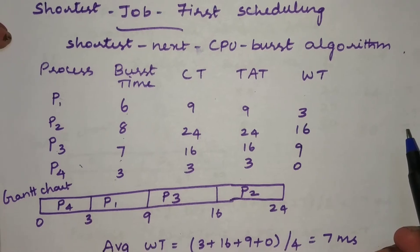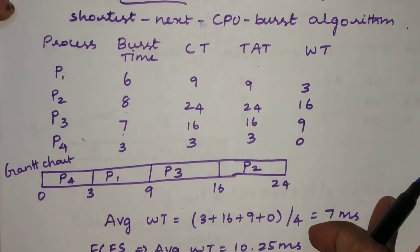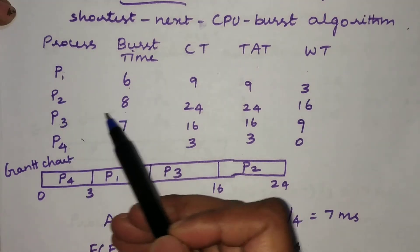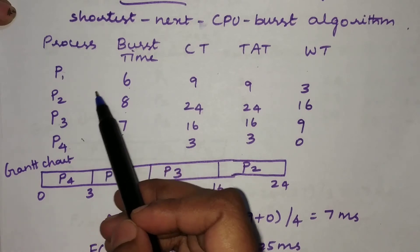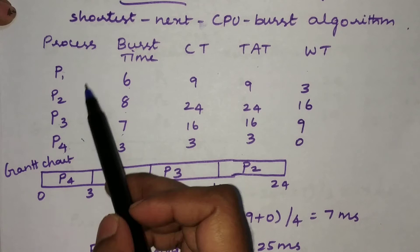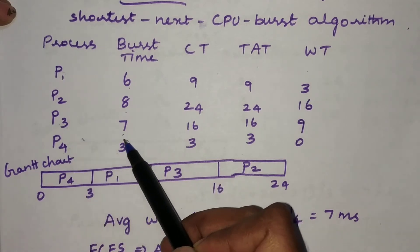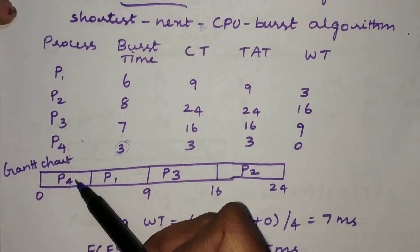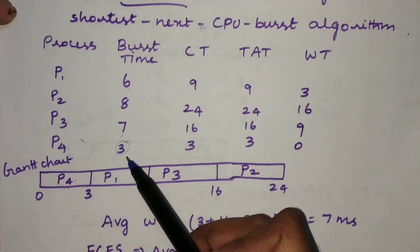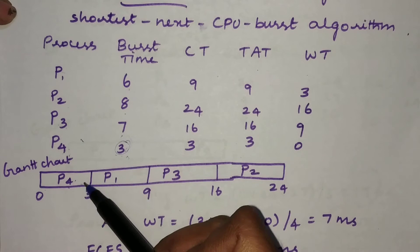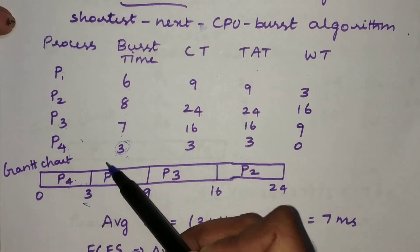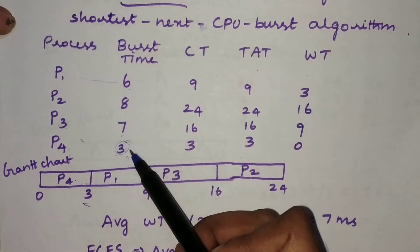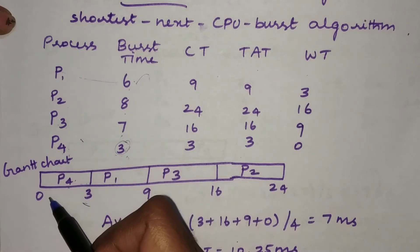Before calculating those times, we need to draw the Gantt chart. Since all processes arrive at the same time, we check which has the shortest burst time. Among P1, P2, P3, and P4, P4 is the shortest. So we schedule P4 first at time zero. It runs for three units of time and completes at time three.